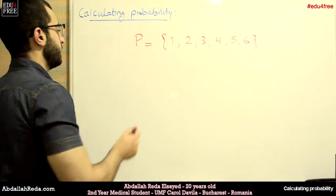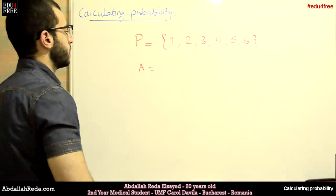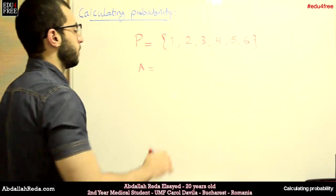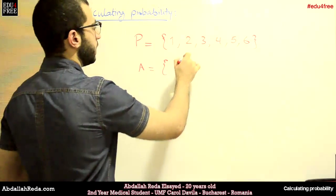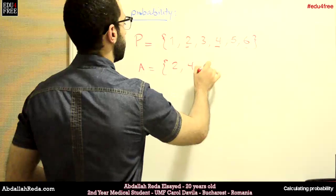And let's say that we have an event A, which is the probability of the appearance of an even number. So that would be 2, 4, and 6.